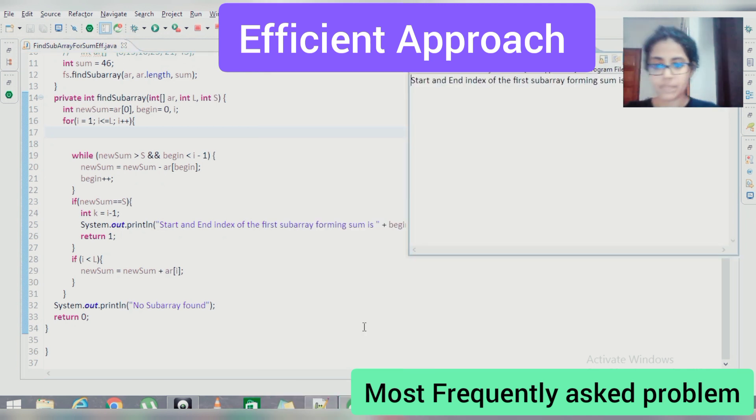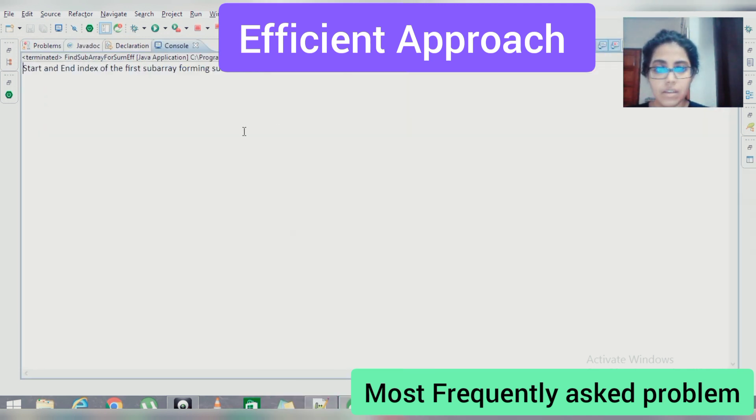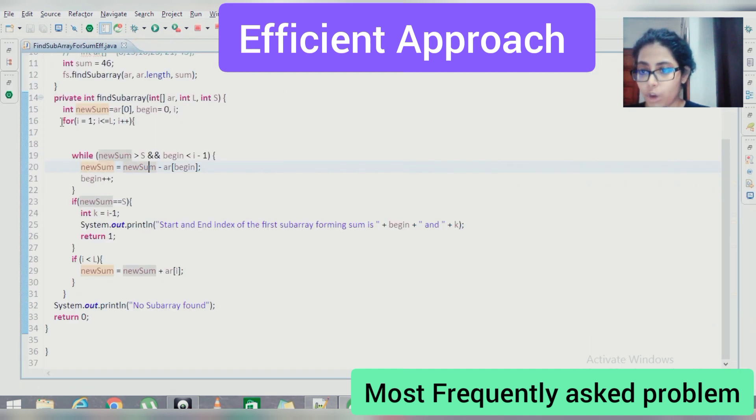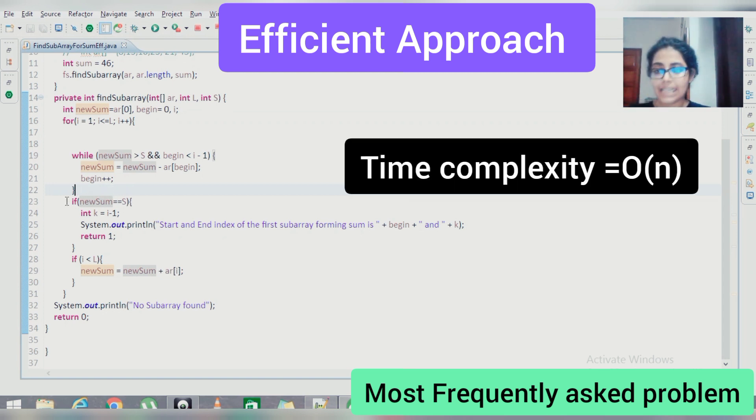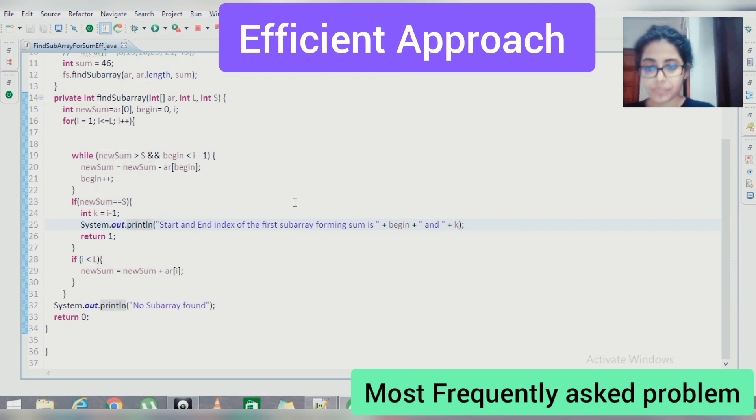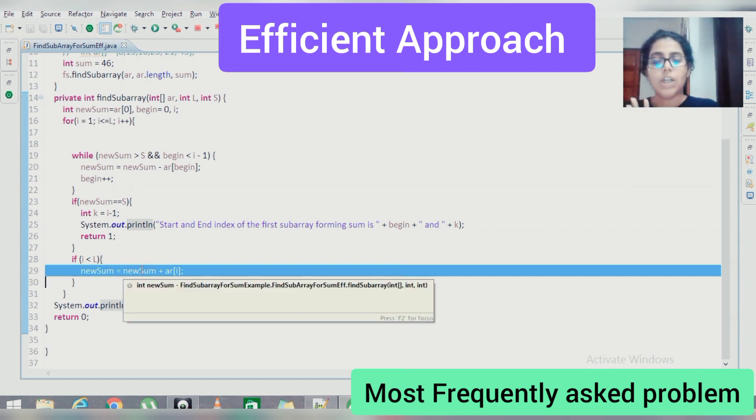So if I run this, see the output, start and end index of the first subarray forming sum is 1 and 3. Here we are using one for loop and the while loop for eliminating the data, and this if loop for checking whether our new sum is already equal to the sum expected or not. If it is, then we are just printing it out here. And this line is nothing but to add all the elements of one subarray one by one, until we are getting some value which is already greater than or equal to our expected sum value.